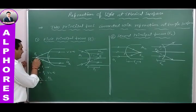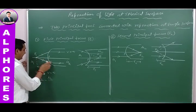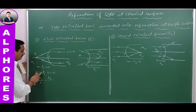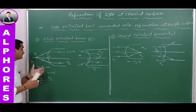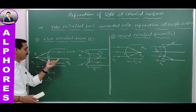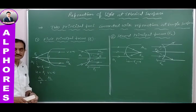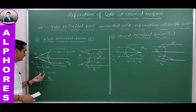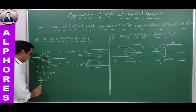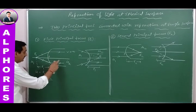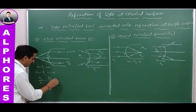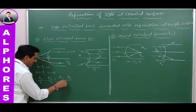To find the first principal focus, place the object at focus point F₁ so light diverges from it. The object distance U = F₁, and after refraction light becomes parallel, so V = infinity. Applying the refraction formula: μ₂/V − μ₁/U = (μ₂ − μ₁)/R, with V = ∞ and U = F₁.